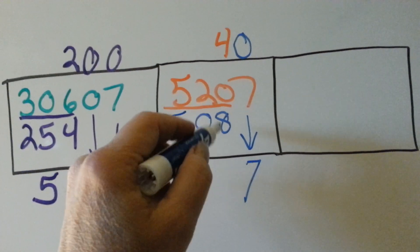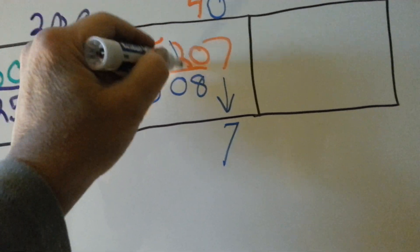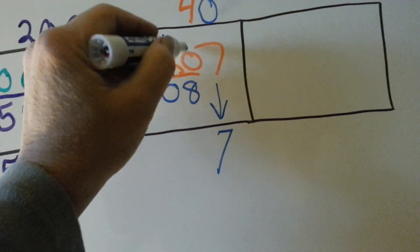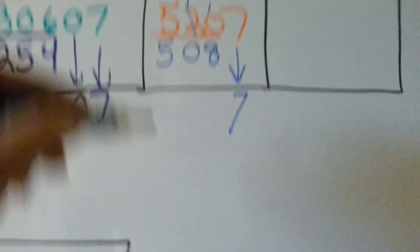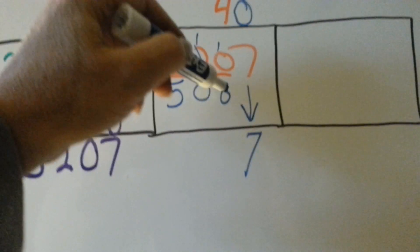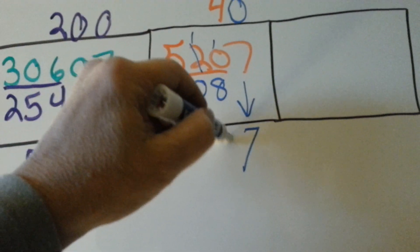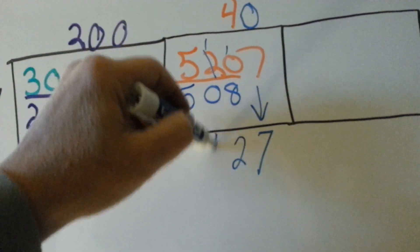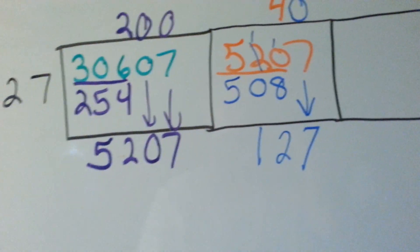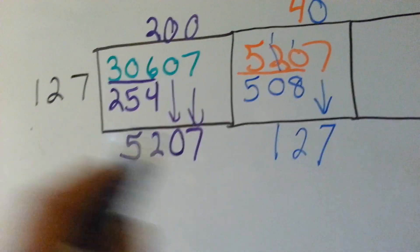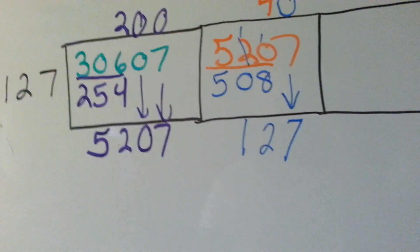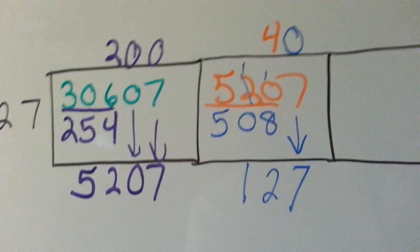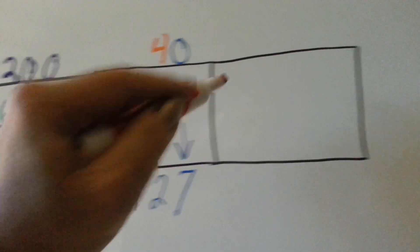Can you take 8 away from 0? Nope, so we're going to borrow from the 2, make it a 1, and that becomes a 10. 10 take away 8 is 2. Then 1 take away 0 is 1. And now we've got 127, so we move this 127 into the box.